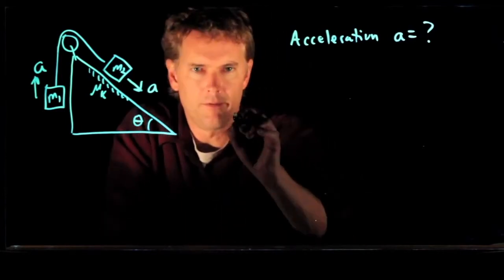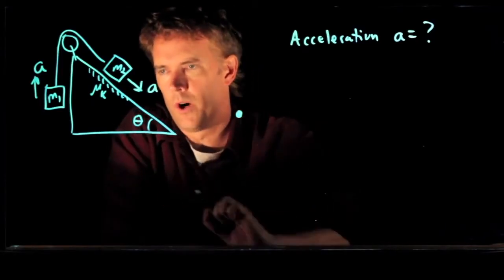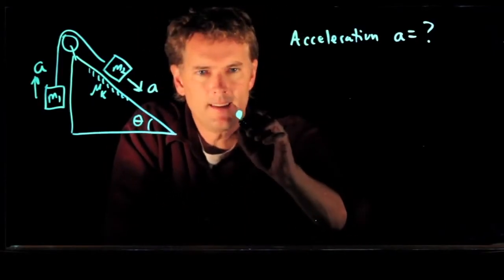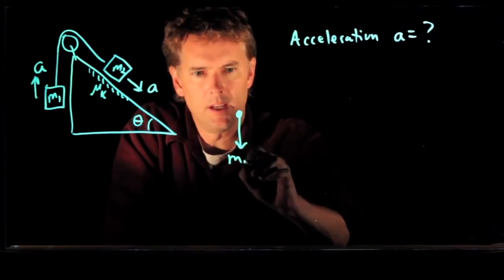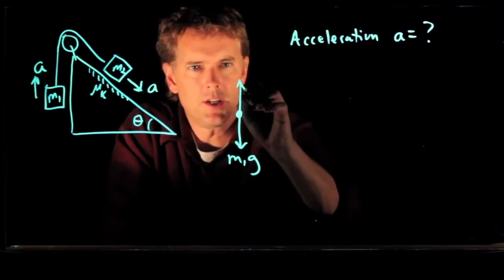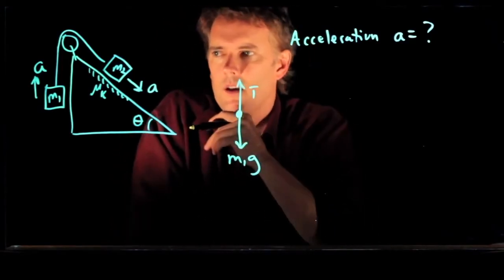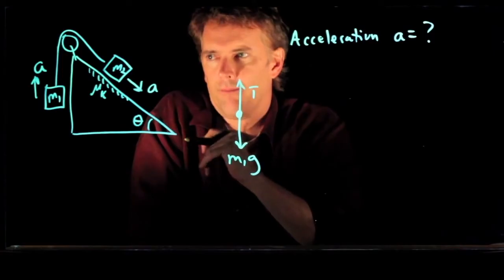So let's draw a free-body diagram for particle number one, M1. What are the forces on it? Well, of course, gravity is pulling down. And we have tension T in the cable going up. And that's it for particle one.